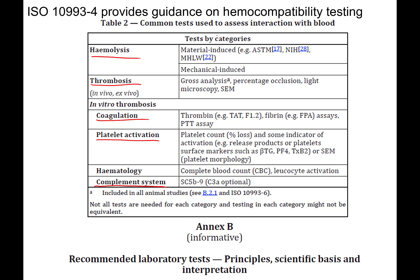For hemolysis, you're looking for some way to quantify hemoglobin release. For thrombosis — particularly in in vivo and ex vivo assays — you can do gross analysis looking at the surface, assess percent occlusion, or use scanning electron microscopy and light microscopy. In vitro, we can look at coagulation in more detail: measuring production of thrombin and fibrin using assays, and using the partial thromboplastin time (PTT) assay to assess how quickly blood clots.